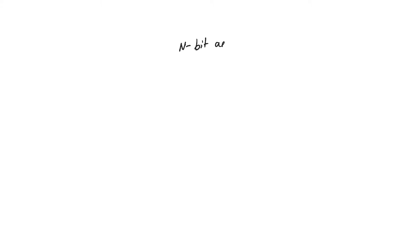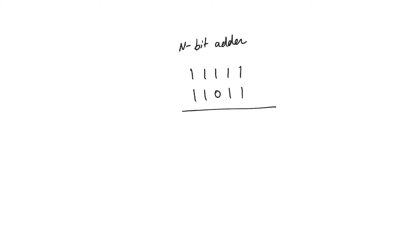Now, let's take an n-bit adder and try to implement it using half adders and full adders. I'm going to take the example of a 5-bit adder, and let's just do a numerical example. So we are adding all ones to perhaps this number.